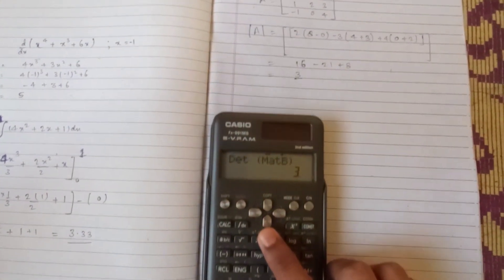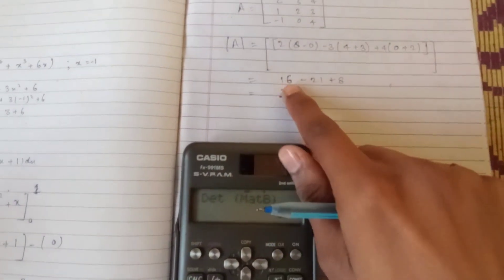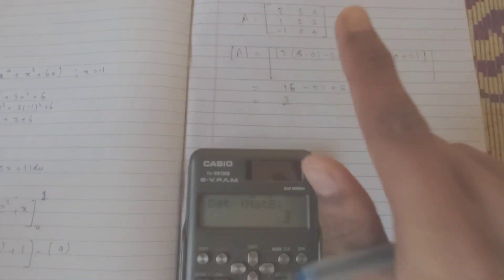That is 3, and in the traditional way we are getting 3.